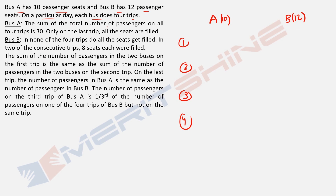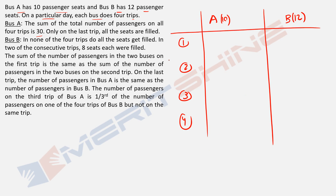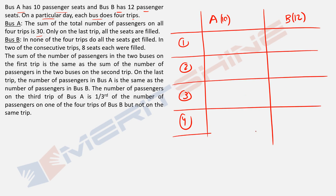Now some data about Bus A: the sum of the total number of passengers in all four trips is 30. Let me make it in the shape of a table. So this sum of the four trip values is 30. Only on the last trip are all the seats filled — that's the SBI Clerk Mains condition for Bus A.